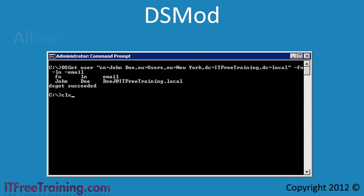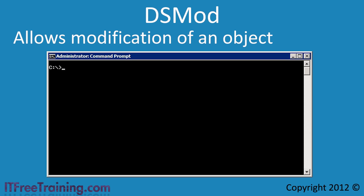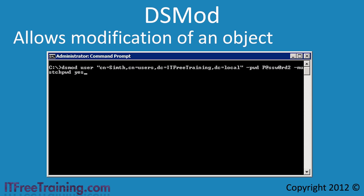The next command is dsmod, which allows Active Directory objects to be modified. I will use the 'user' parameter to indicate I want to change a user account. The distinguished name for the user to be modified needs to be added to the command line. In this case I will change the password using the '-pwd' parameter, and also add '-mustchpwd' so the user will be prompted to change their password the next time they log in. By using a script, you can automate the changing of user passwords — much faster than using a graphical tool like Users and Computers. The command will run and succeed like the others.